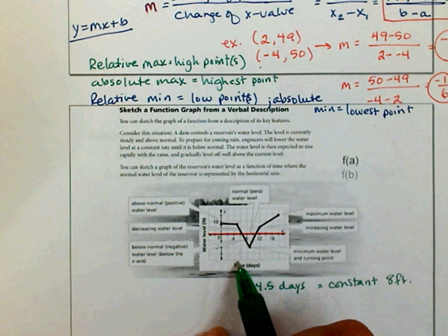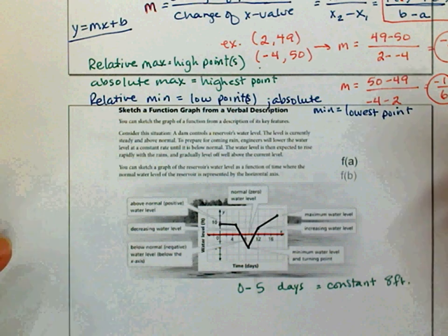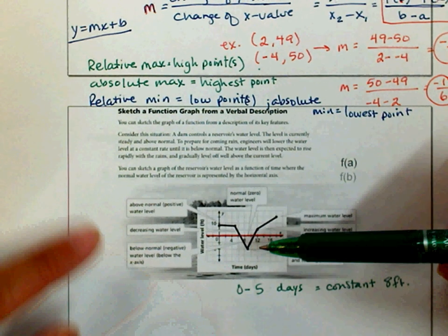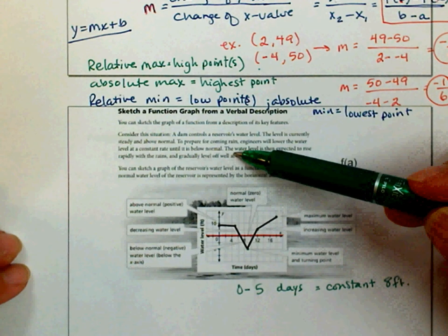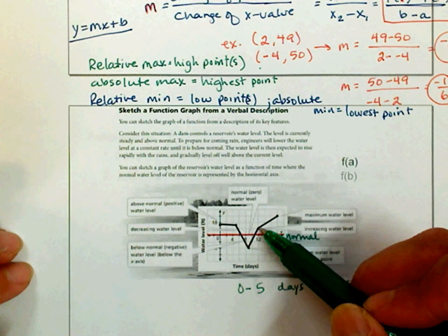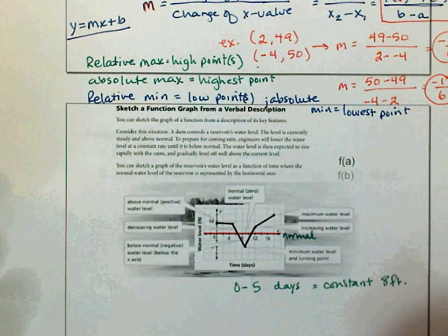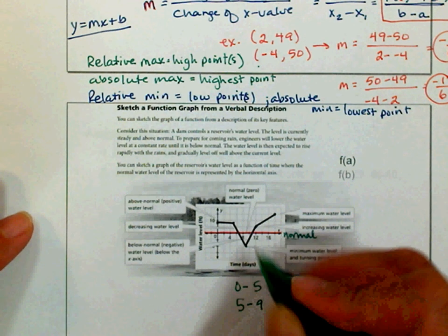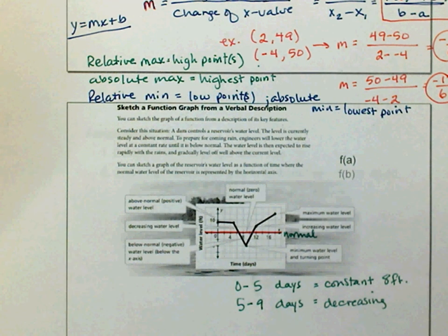From, that looks like 5 days, not 4 and a half. I'm so sorry. I'm going to look at my scale. So that's 2, 4, 5. Okay, 5 days. 0 to 5 days, it is at a constant. To prepare for incoming rain, the engineers will lower the water. As you can see, the level of the water goes down. It even goes below the water level. At a constant rate. Constant means it's steady. It's going the same amount every hour. Until it is below normal. So this right here is normal. The water level is then expected to rise with the rain. You guys see that? And then after it quits raining, it's going to start to level off. And eventually, from here, it's going to go at a constant rate. So from 5 days to about 9 days. You know, it's like maybe day 6, 5 to 9. What is happening right there? It is decreasing. You guys see that? Even to the point of going beyond normal. Decreased so much to like negative 10. That looks like negative 10. So minimum water and turning point. See that? There's a turn.